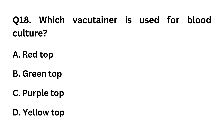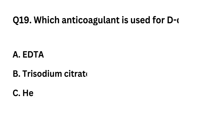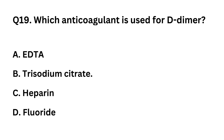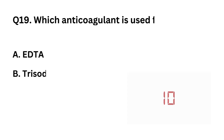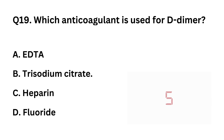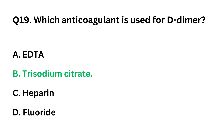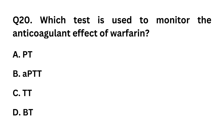Question 18: Which vacuum container is used for blood culture? Option A: Red top. Option B: Green top. Option C: Purple top. Option D: Yellow top. The correct answer is Option D: Yellow top. Question 19: Which anticoagulant is used for D-dimer test? Option A: EDTA. Option B: Trisodium citrate. Option C: Heparin. Option D: Fluoride. The correct answer is Option B: Trisodium citrate.